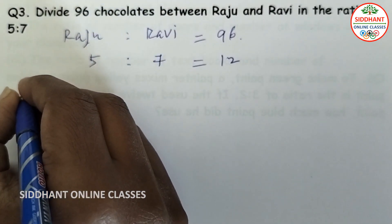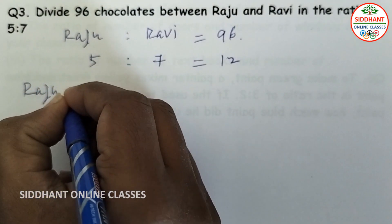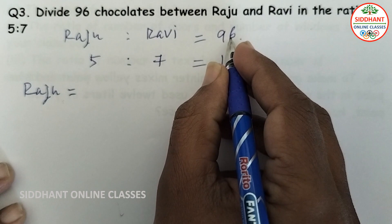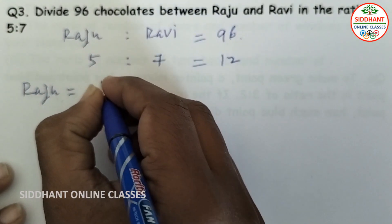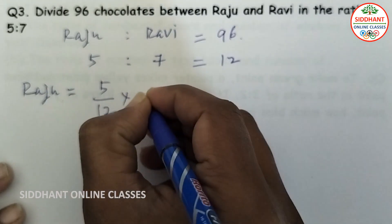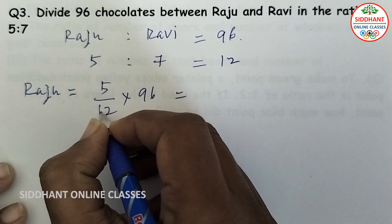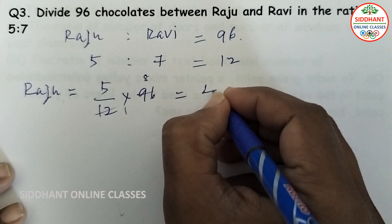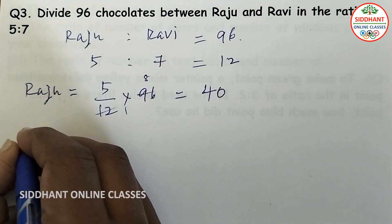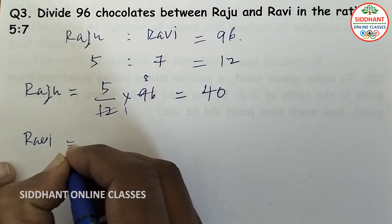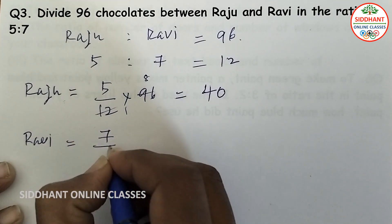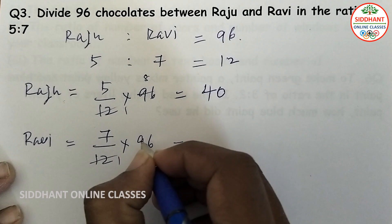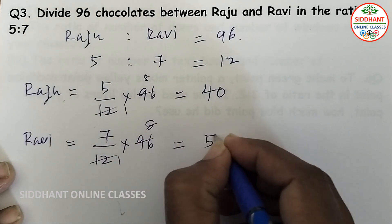Raju's share: 5 parts out of total 12 parts, multiplied by 96 chocolates. That is 5 by 12 into 96, which gives 40. Ravi's share: 7 parts out of 12 parts, multiplied by 96. That is 7 by 12 into 96, which gives 56.